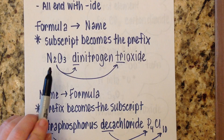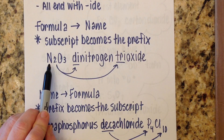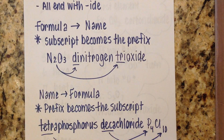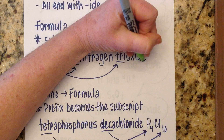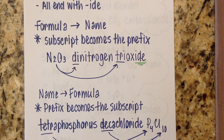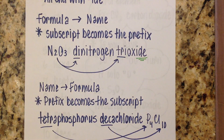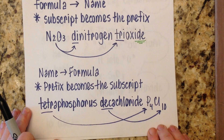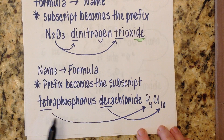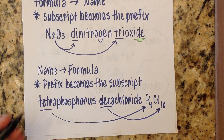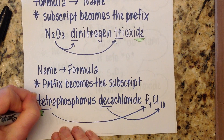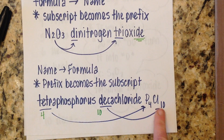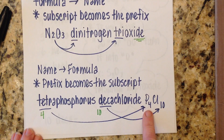The prefix simply goes to the front of the word. So N2O3 is dinitrogen trioxide — notice I did not change the ending of the first word, and the second word ends with IDE. Likewise, if you're given the name and asked for the formula, the prefix just becomes the subscript — it's the opposite. So tetraphosphorus decachloride is literally telling you: four phosphorus atoms and ten chlorine atoms. Write the elements in the same order as the name: P4Cl10.